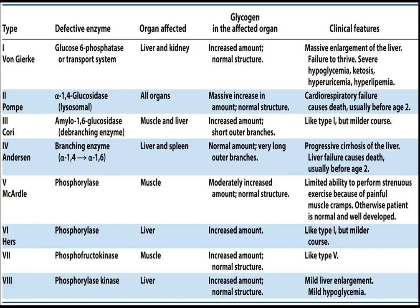Glycogen accumulates in the affected organs with increased amount but normal structure. Clinical features include enlargement of liver, failure to thrive, severe hypoglycemia — hypoglycemia is very important and you need to manage it. Also ketosis, hyperuricemia, and hyperlipidemia.